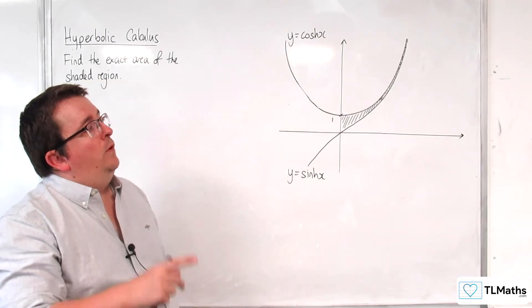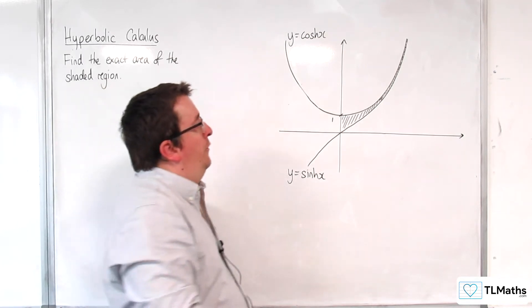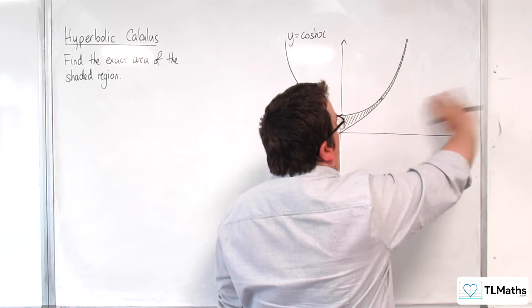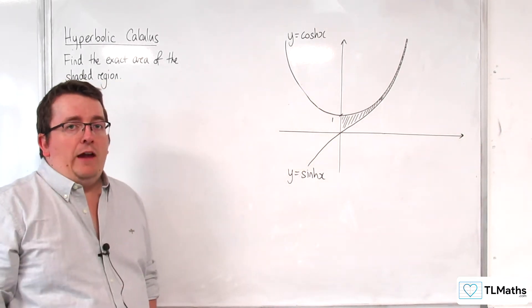So the question now is, instead of stopping at 4 fifths, what if we went to infinity? What would be the area then?